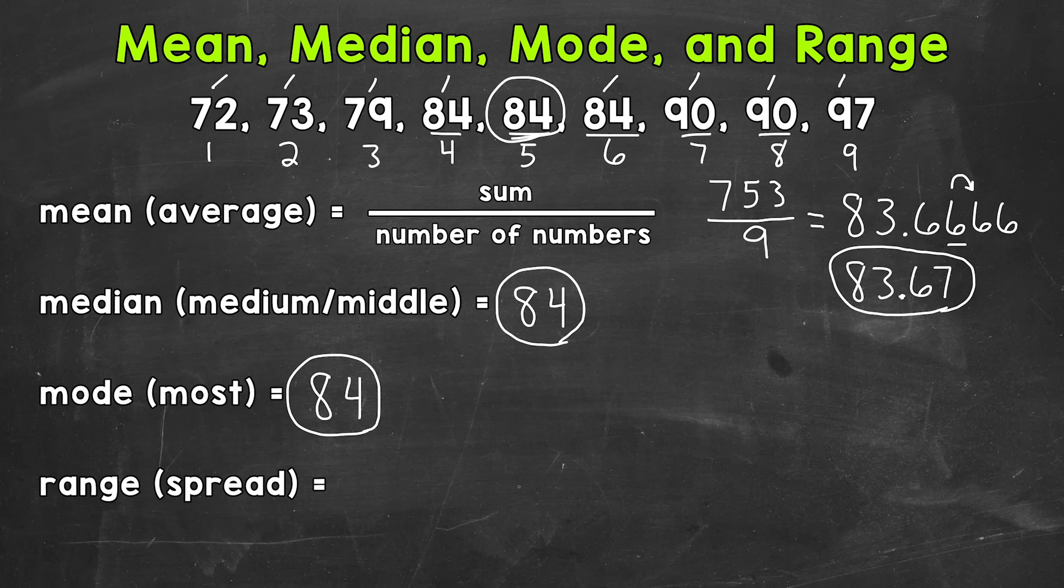Let's move on to range. Now range tells us how stretched out our data is, so to speak, how far everything spans. We find the range by subtracting the smallest number from the largest number. This gives us how far apart those numbers are, and then the rest of the data is within that range. So largest number minus smallest number.